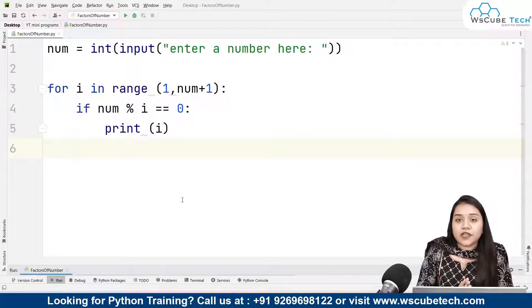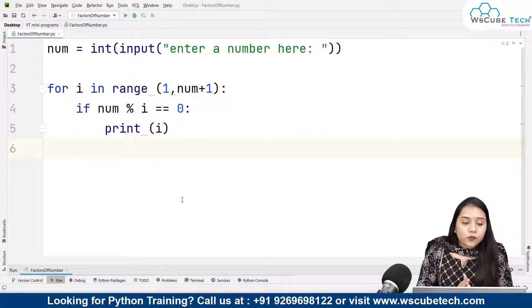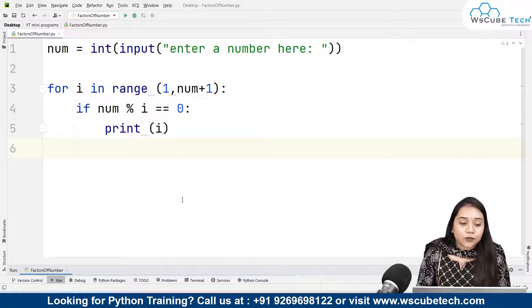This is how you can find the factor of any number. All you need to do is first of all you need to take a user input, use for loop to go up to a certain range. The range will start from 1 up to that number that we have taken from the user as an input.